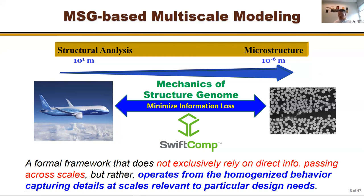It's a formal framework that does not exclusively rely on direct information passing between scales as in traditional multi-scale modeling. Instead, it operates from homogeneous behavior and captures details at scales relevant to a particular design. For example, if I want to treat a wind turbine blade as a beam, I'm interested in torsion and bending stiffness to predict flutter and divergence due to aerodynamic forces.